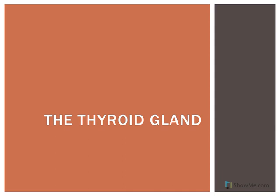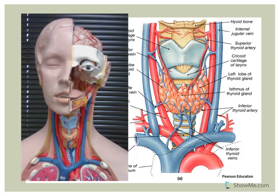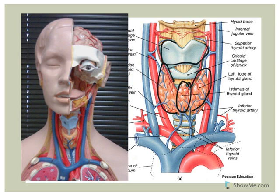The thyroid gland has two lobes separated by a region called an isthmus. It's located in the anterior cervical region, just anterior to the trachea. It's below the structure referred to as the thyroid cartilage, which is part of the larynx, or what some people refer to as the voice box.